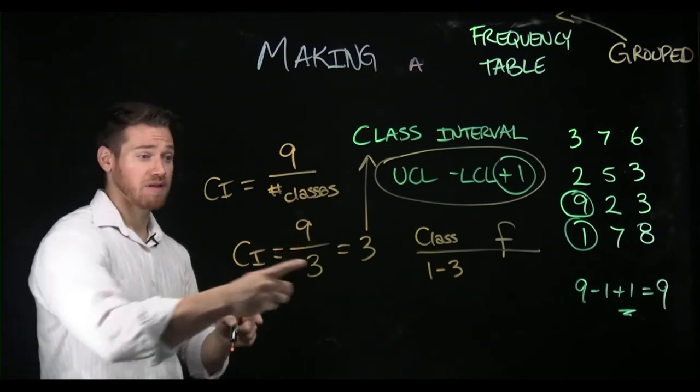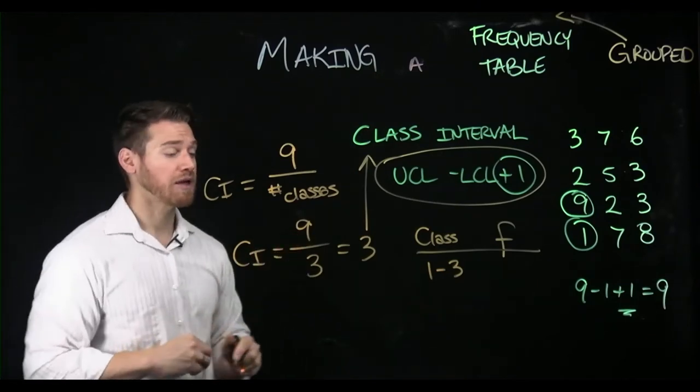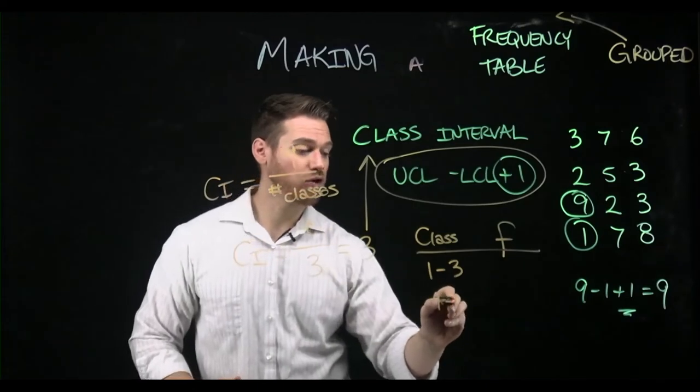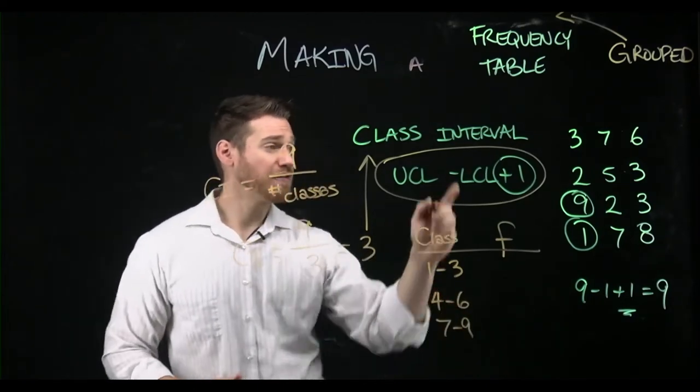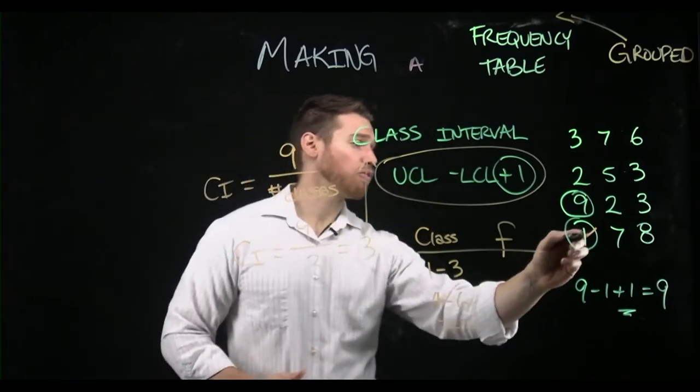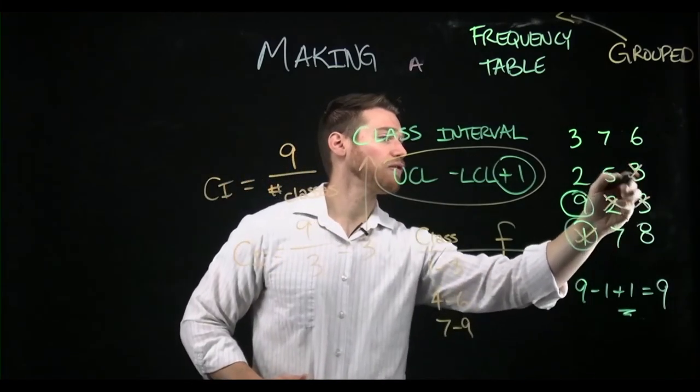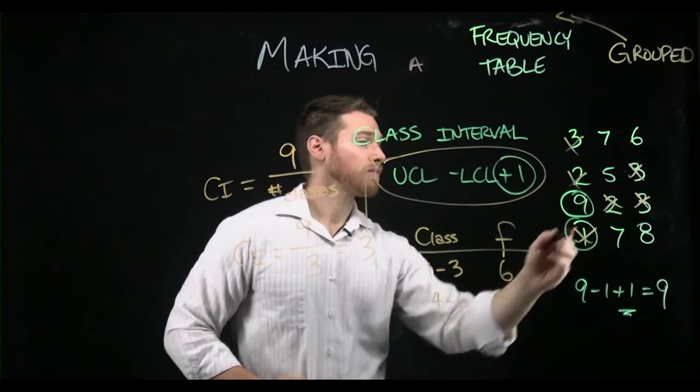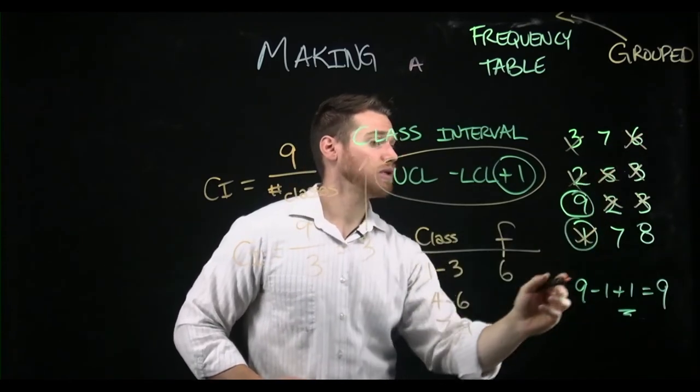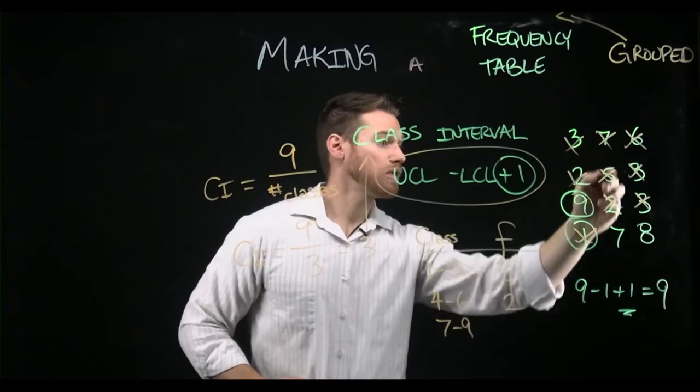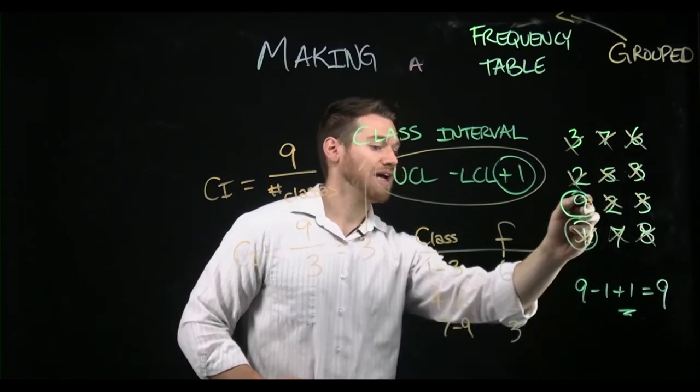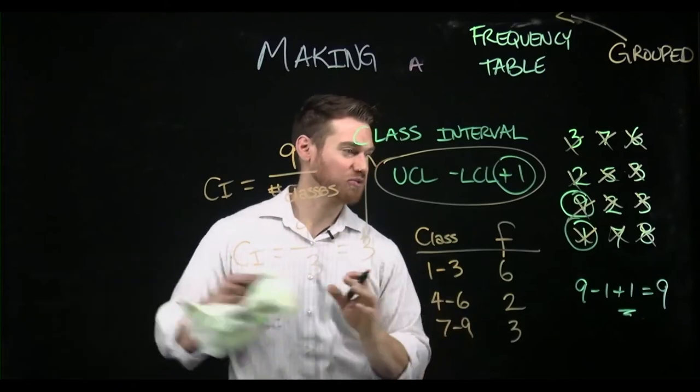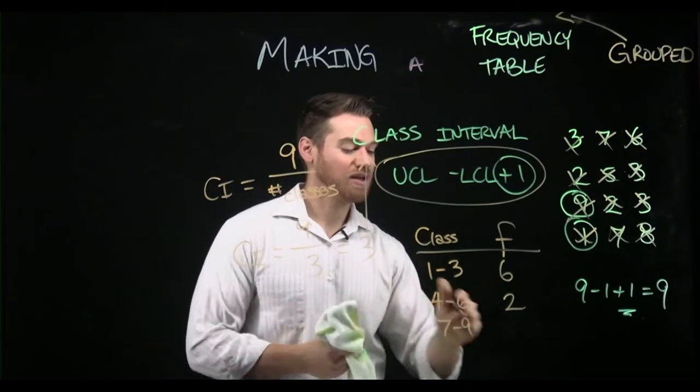The frequencies for those would come from my table. So one, two, three, three; four, five, six; one, two; one, two, three. I missed one, the circled one, so four.